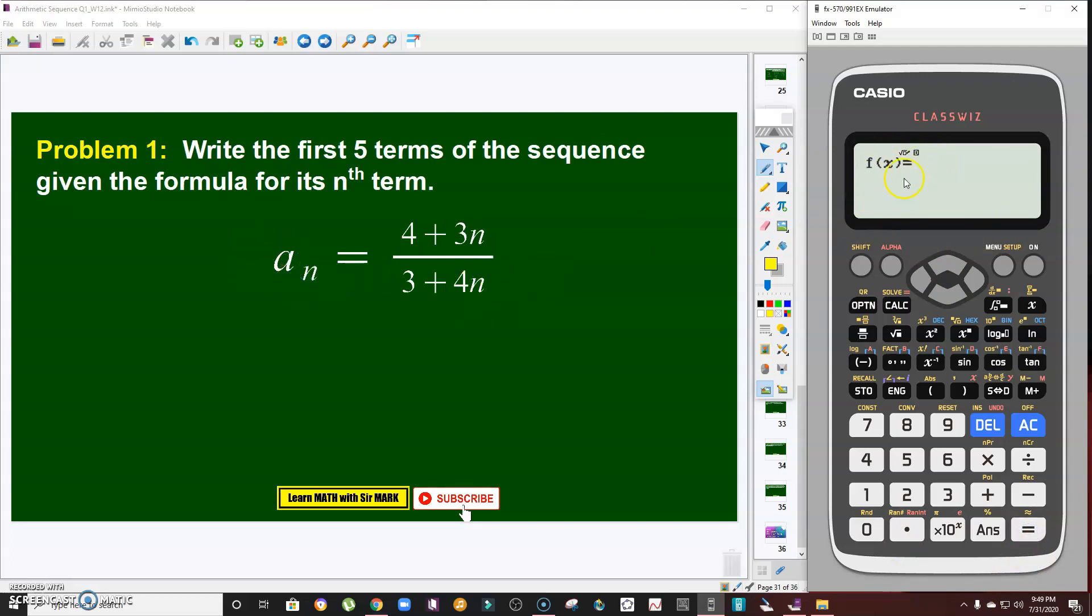Your a_n corresponds to f(x). Remember, f(x) is a function. Your f(x) will depend on your x, right? Similarly, your a_n here, the value of a_n will depend on the choice of n. All you have to do is input this expression: 4 plus 3n. Since it's f(x), my independent variable is x, so I'm going to use x instead of n.